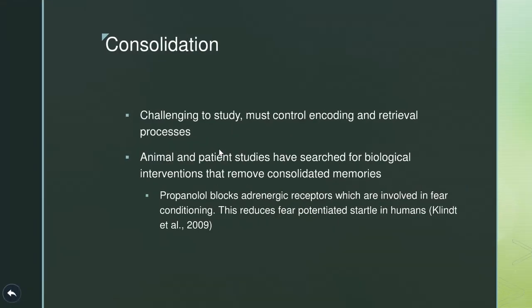Now, consolidation, you wouldn't talk much about this in a typical human memory class. It's very challenging to study. If you think about it, you have to control all of the encoding processes and all of the retrieval processes, and you're basically looking at how memories form and whether or not they change over time. So this is pretty challenging. You will see this literature has emerged from both animal and patient studies, where what they're doing is they're looking for biological mechanisms that promote or interrupt storage of more permanent memories. And so what they're focused on is finding interventions that remove or alter memories that were previously consolidated or formed.